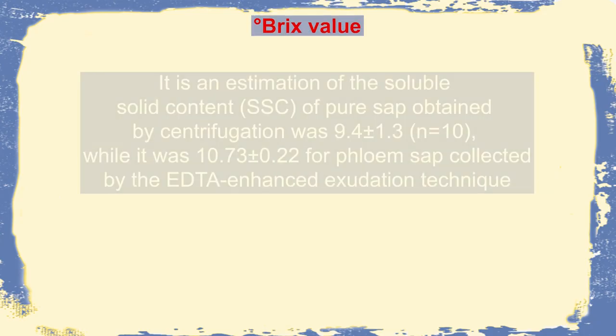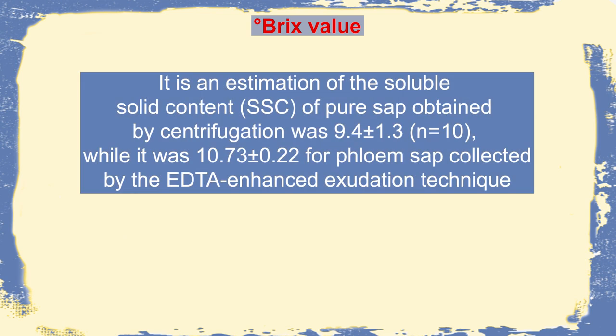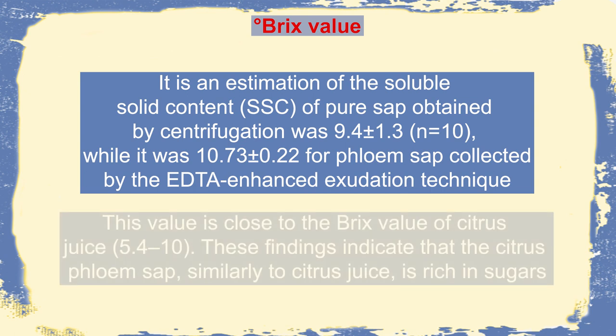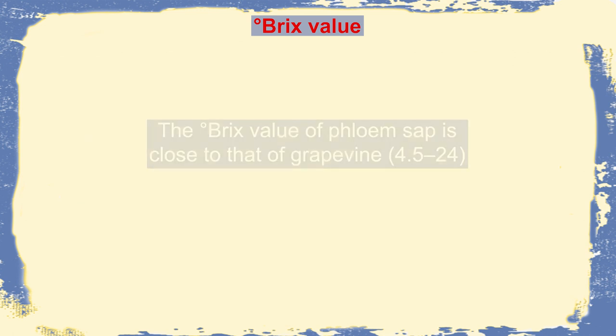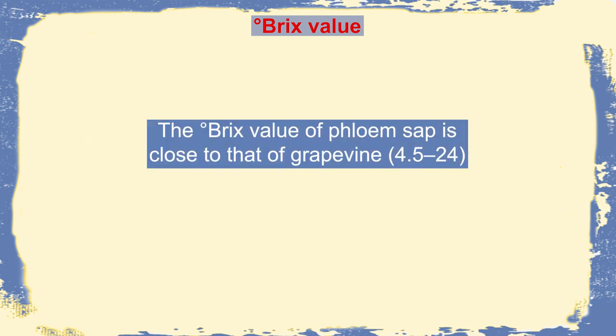A unique formula is the Briggs value — the estimation of soluble solid content of pure sap obtained by centrifugal saturation. It can be as high as 9 to 10, but for citrus juice the Briggs value is 5.4 to 10, and in grapevine phloem sap it is 4.5 to 24. Basically, it is an indication of soluble sugar and protein present in phloem sap.